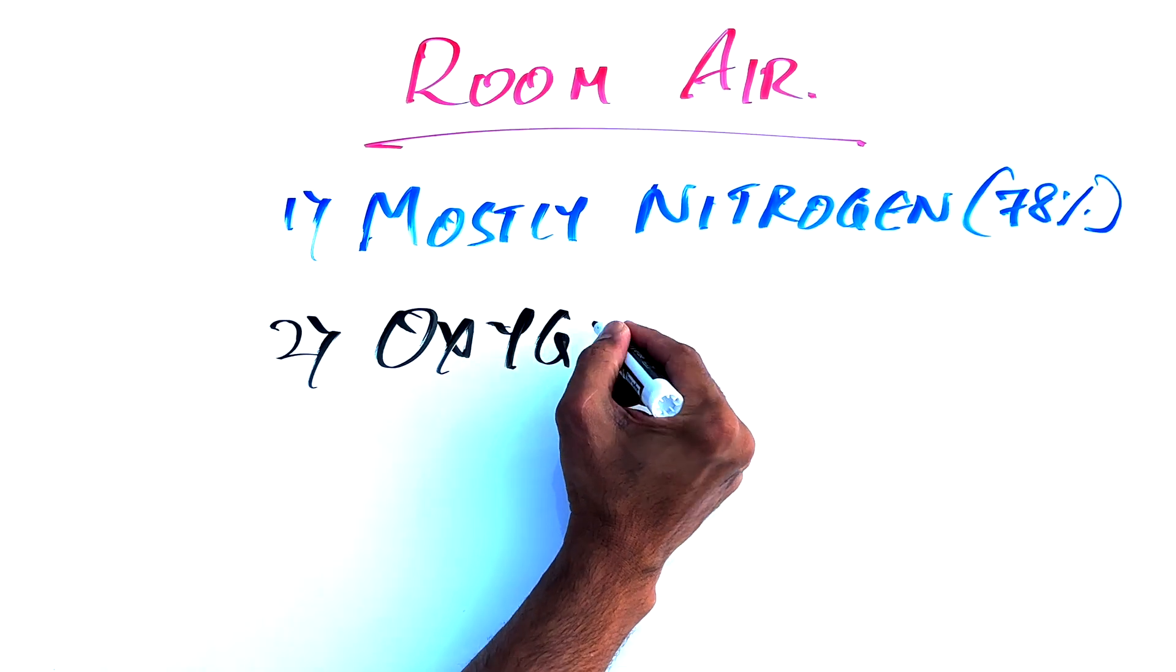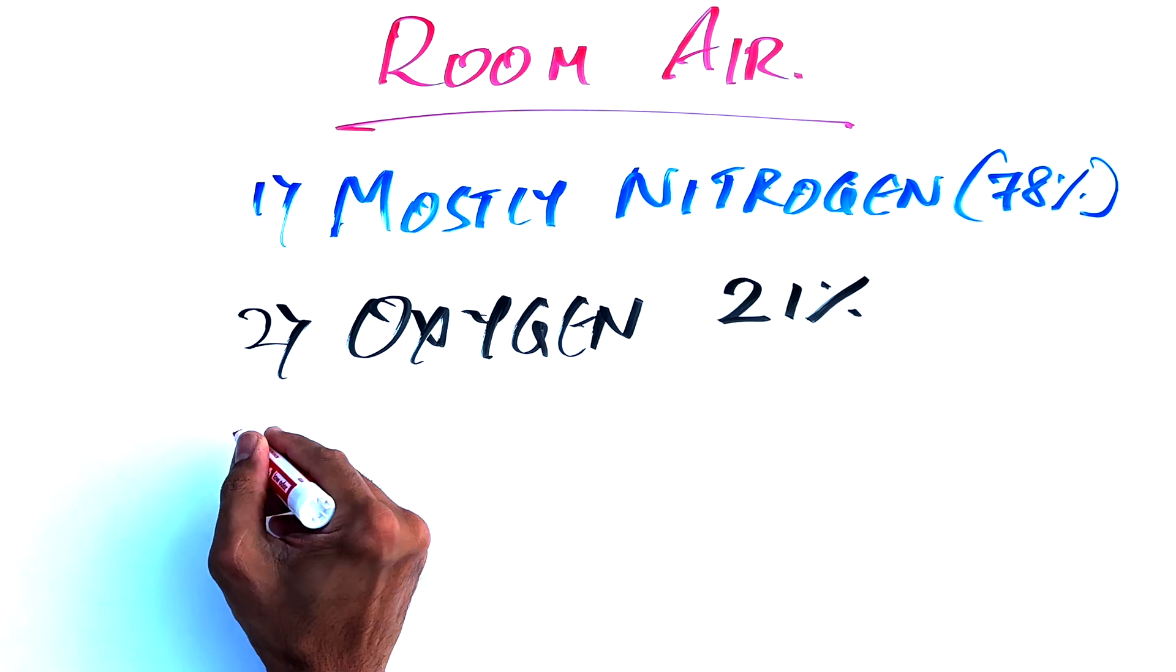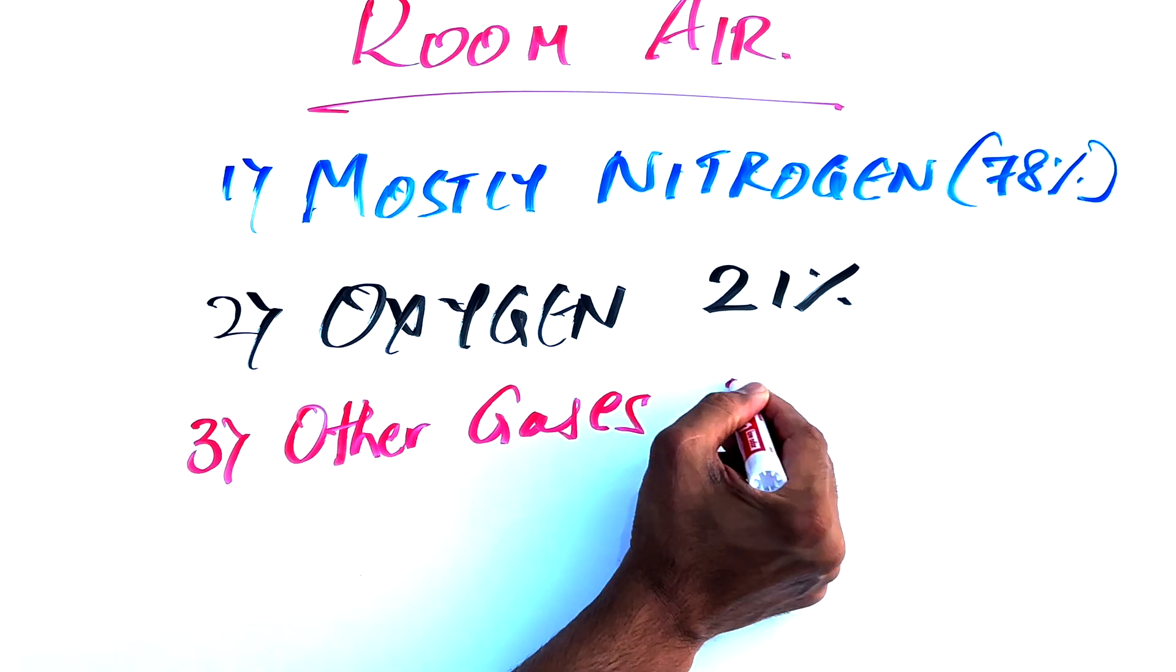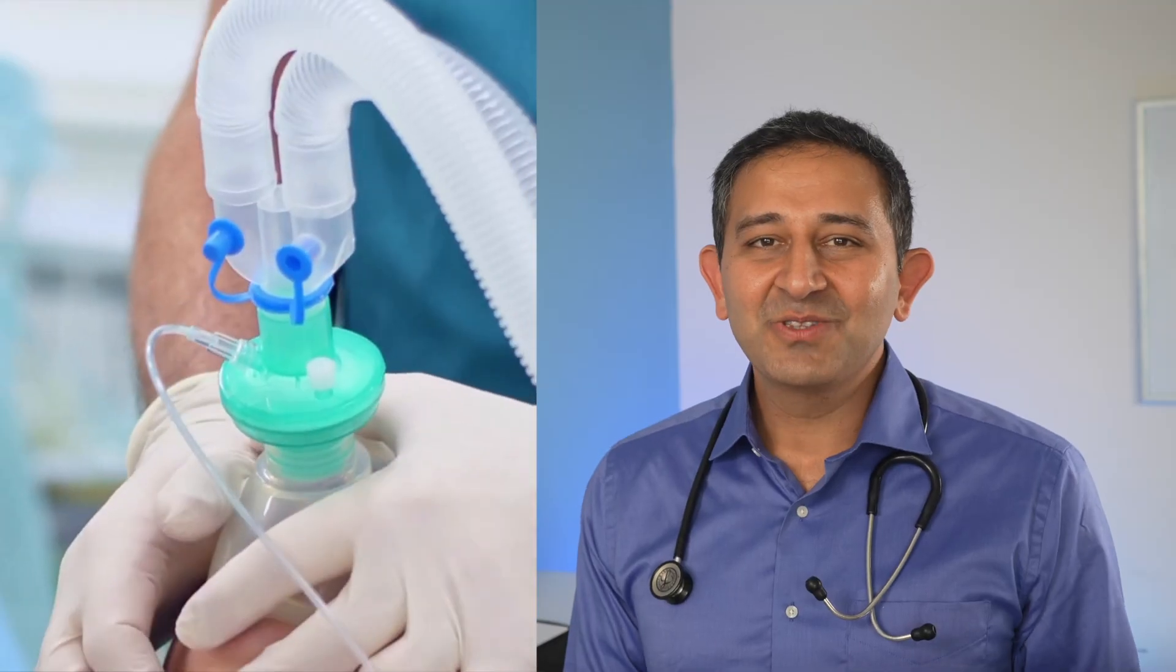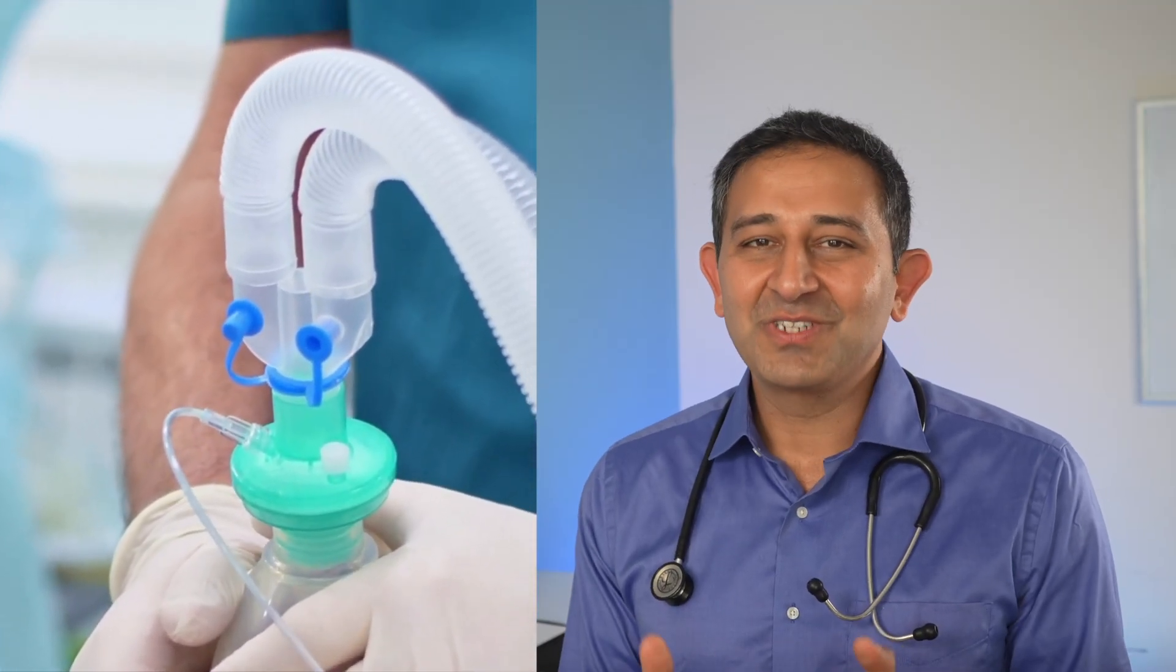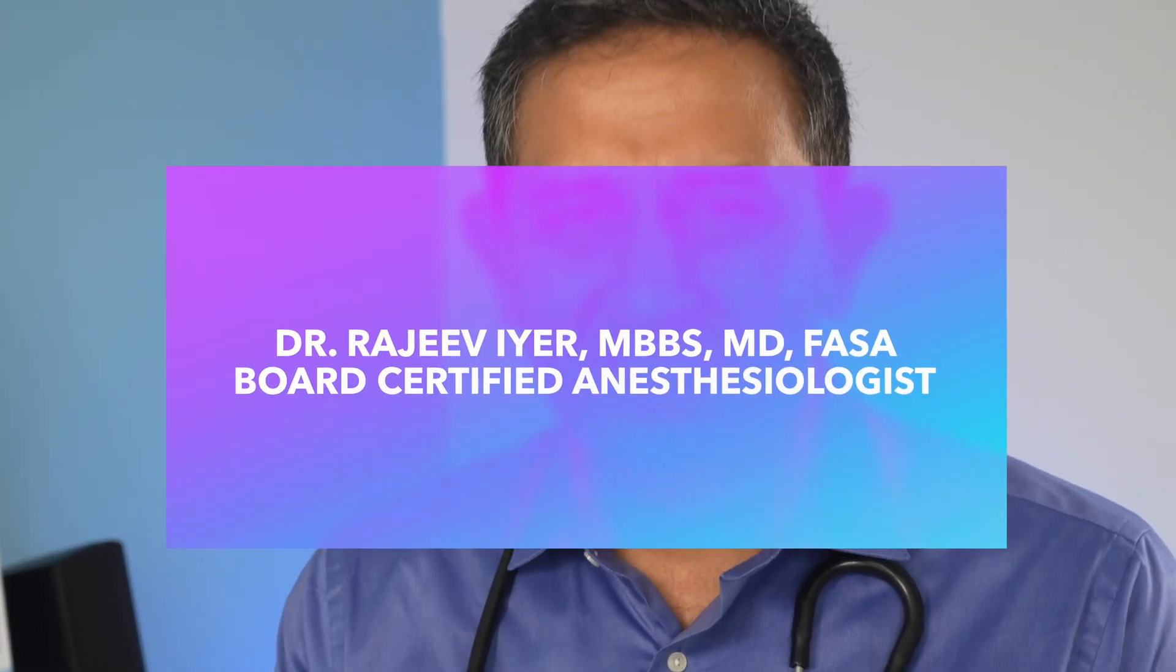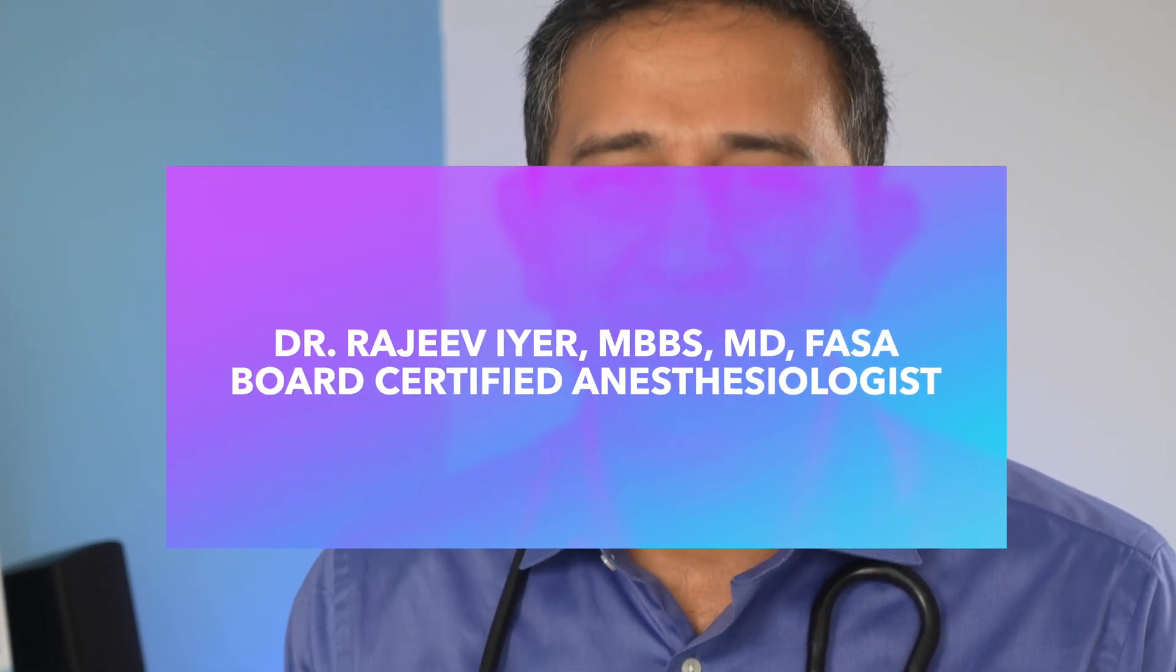Normally everyone is breathing room air, which is mostly nitrogen and only 21% oxygen. A mask with oxygen is given before starting anesthesia so the anesthesiologist can have the extra security of greater oxygen reserve than found when breathing room air.